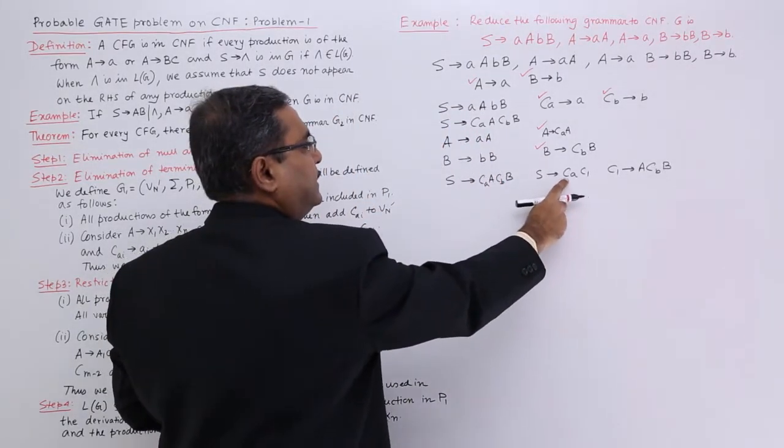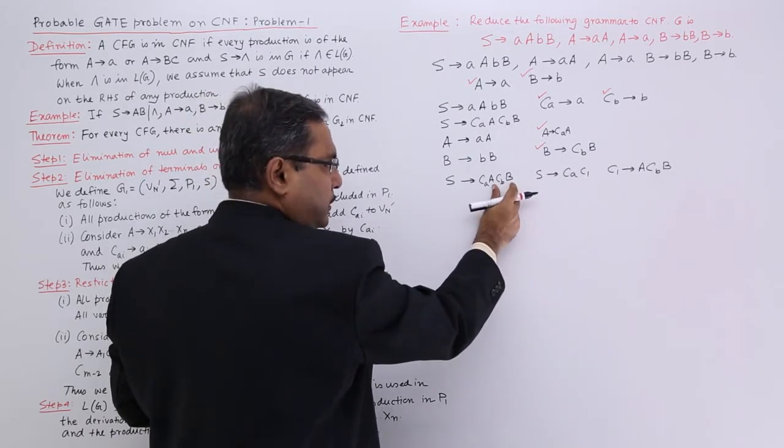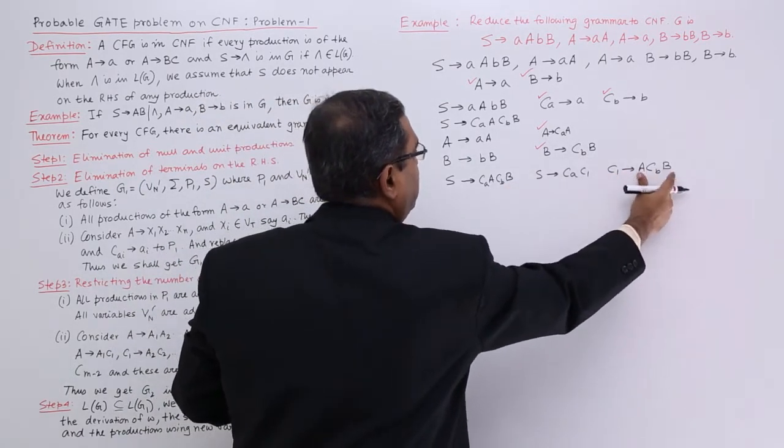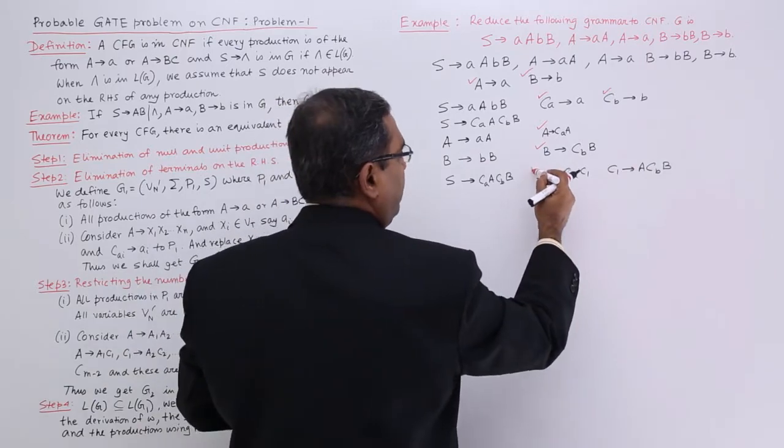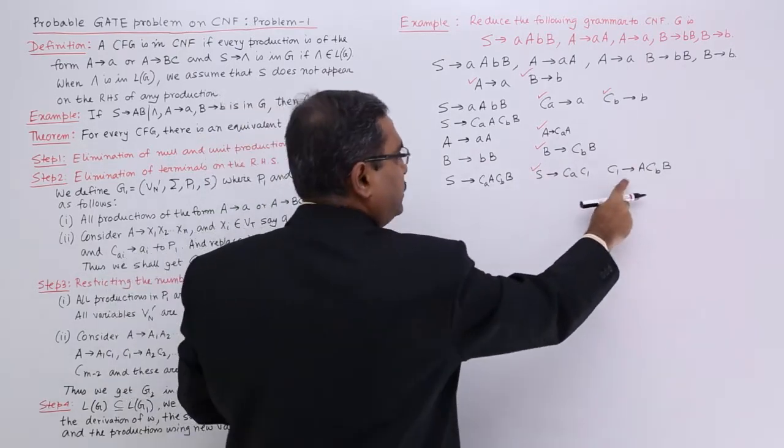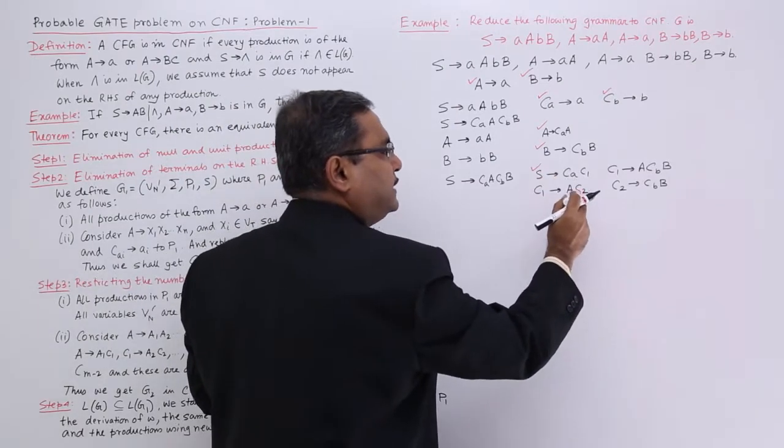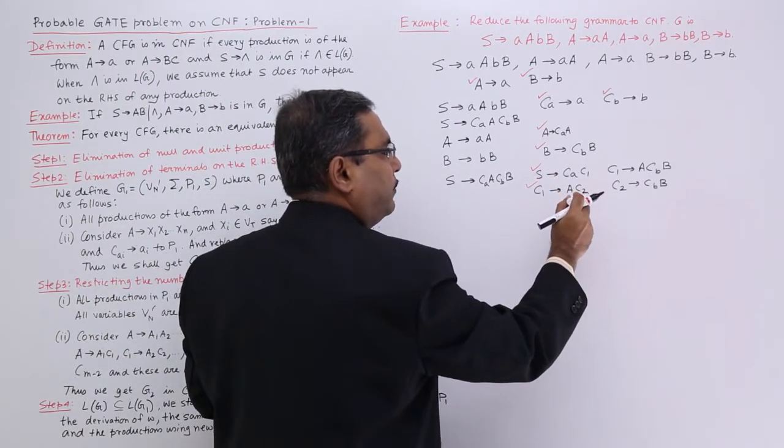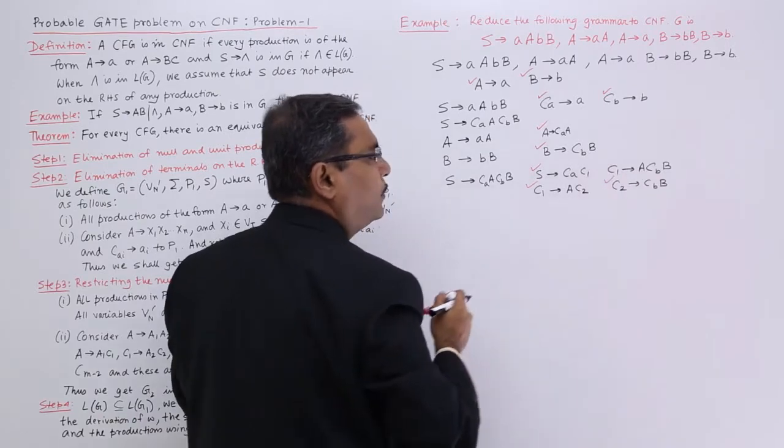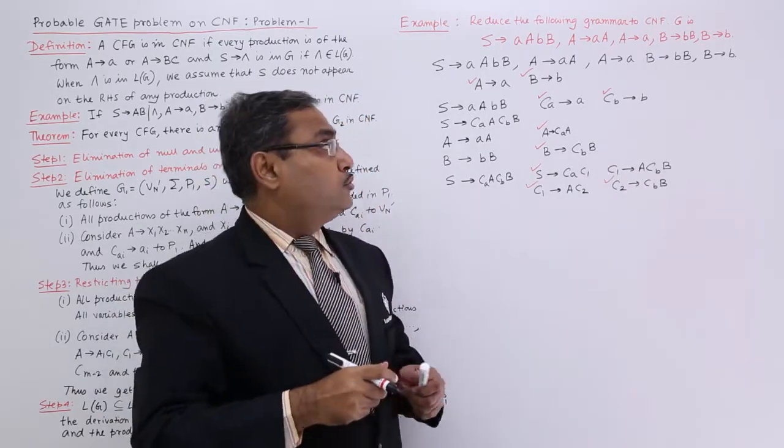S produces CAC1. The rest part will be C1 will produce that one, so it is in Chomsky's normal form. For this one, C1 produces CAC2, it is in Chomsky's normal form, and C2 produces CBB. It is also in Chomsky's normal form. Here all the tick mark production rules are coming in Chomsky's normal form.